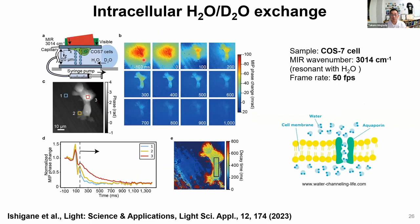Since we have a very fast measurement technique, we demonstrated intracellular water and heavy water exchange measurement. We put the cell in water first and illuminated IR light resonant with water, seeing the full field of view. We then quickly exchanged the water with heavy water. Outside the cell, the water signal disappears quickly, but inside the cell the water signal remains briefly. This provides information on how fast water molecules pass through water channels called aquaporins — taking around 300 milliseconds.